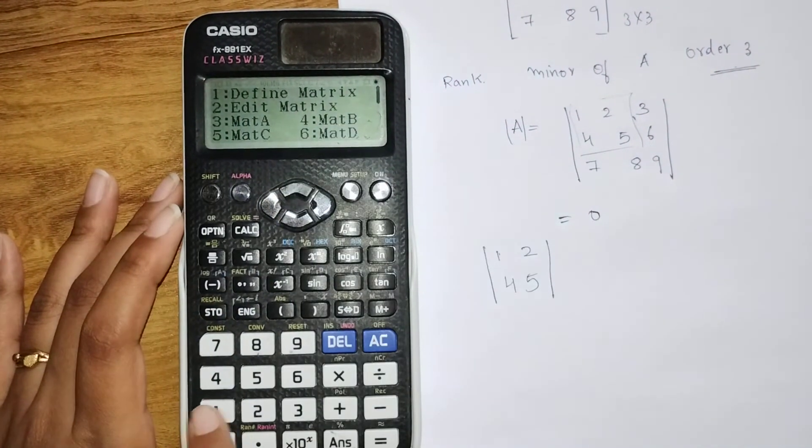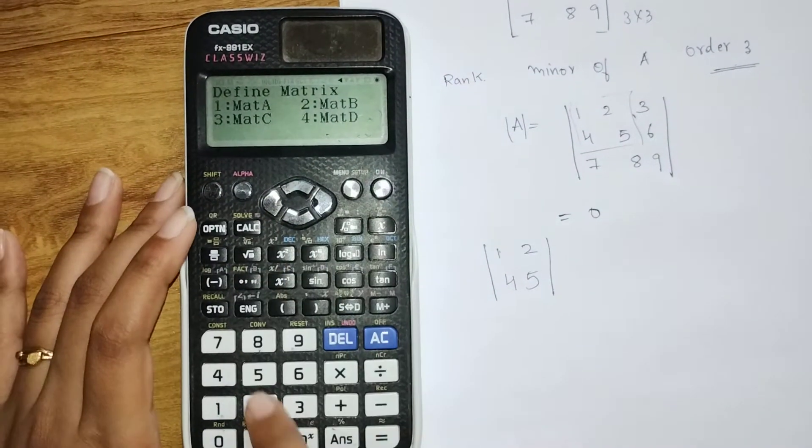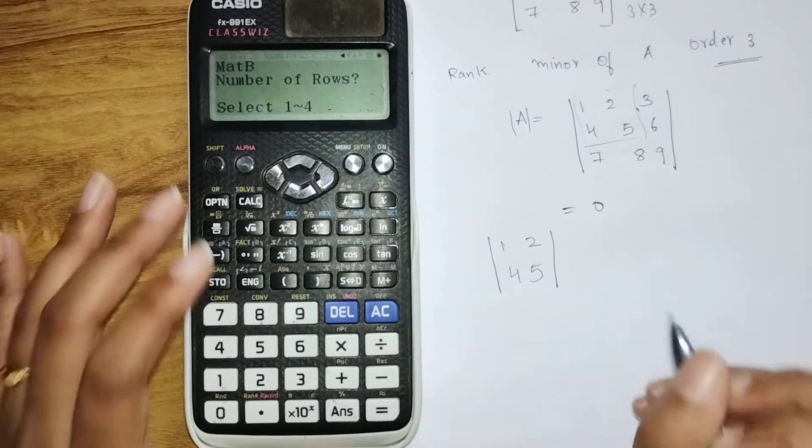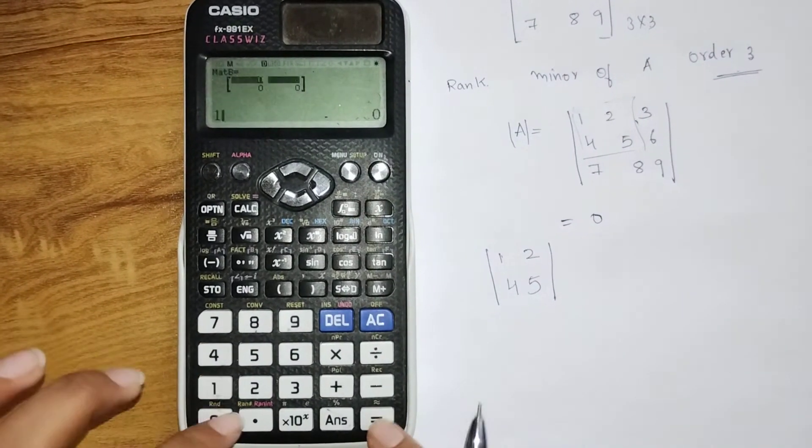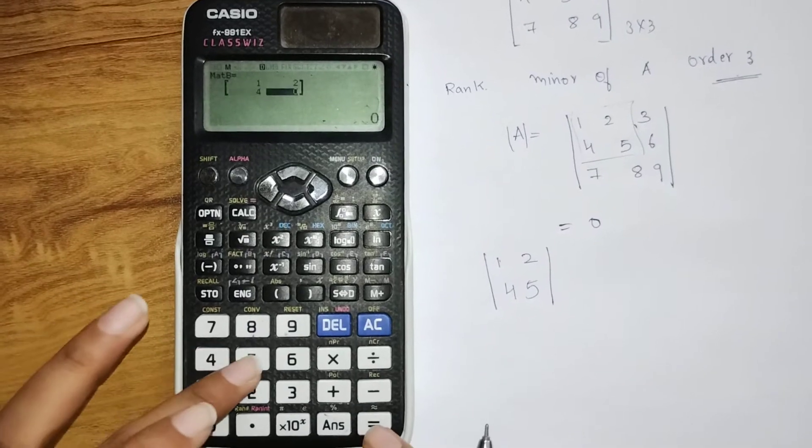We need to define a matrix. Number of rows and columns - it's a 2 by 2 matrix, so 2 by 2. So 1, 2, 4, 5. Now go to Option. Matrix calculation - click on 3. Again go to Option. Determinant.